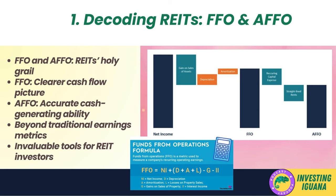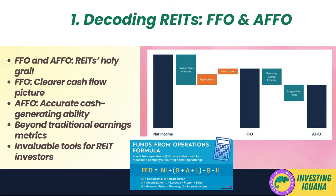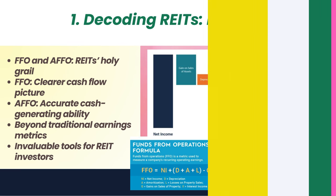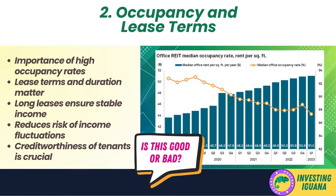AFFO takes the calculation a step further — it subtracts from FFO any recurring capital expenditures needed to maintain the quality of the REIT's underlying assets, giving an even more accurate representation of the REIT's ongoing cash-generating ability. Both FFO and AFFO provide investors a more accurate picture of a REIT's financial performance than traditional earnings metrics, accounting for the unique factors of real estate operations such as depreciation. This makes them invaluable tools when assessing a REIT's performance and potential.